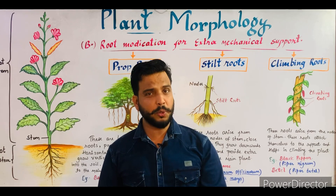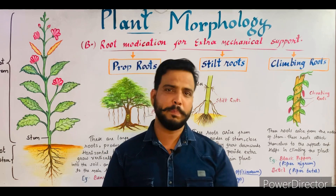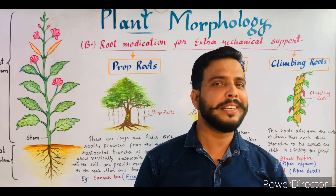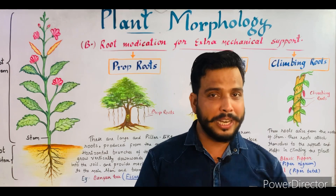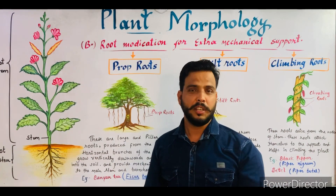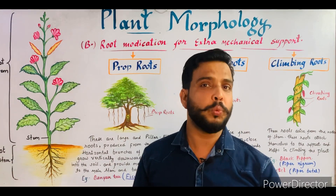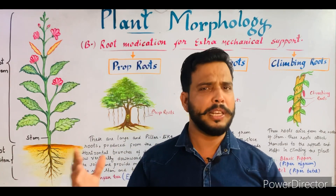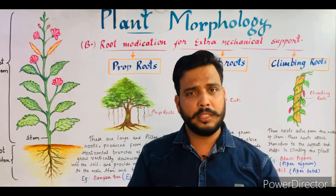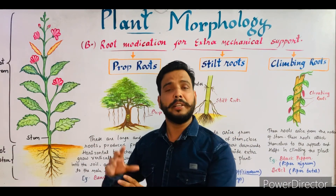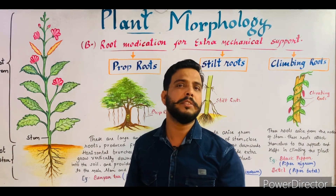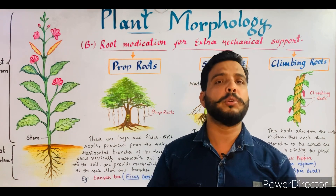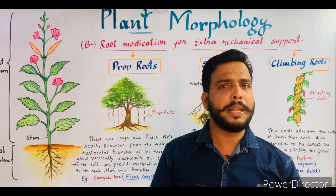Good morning everyone, my name is Vijay Gupta and you are watching biology classes. In this lecture of biology, as you know, I'm currently making all my videos related to plant morphology — a branch of botany that deals with the study of external parts of plants such as root, stem, leaf, etc. In this series I'm telling you about the different parts of the plant. I started the first topic with root, and now in this lecture I will tell you about the modification of roots.